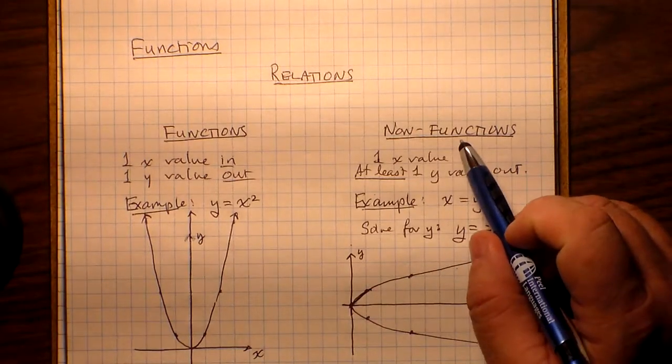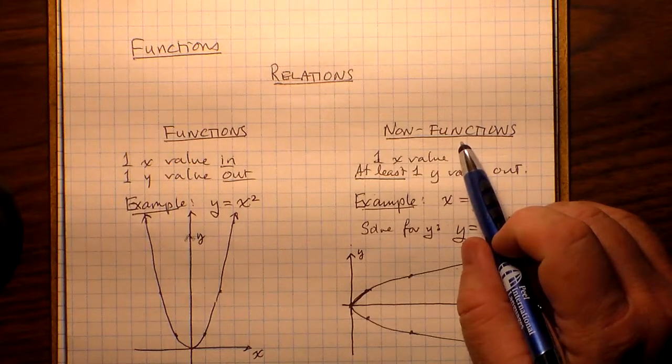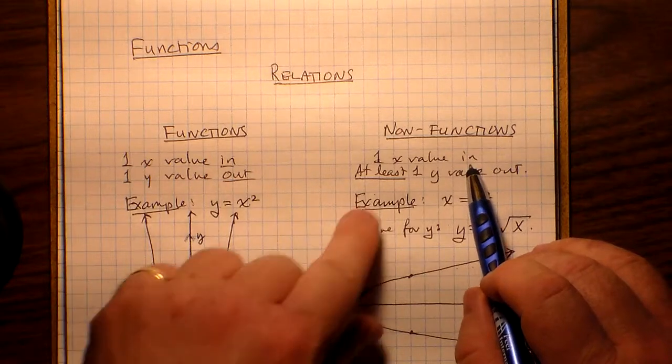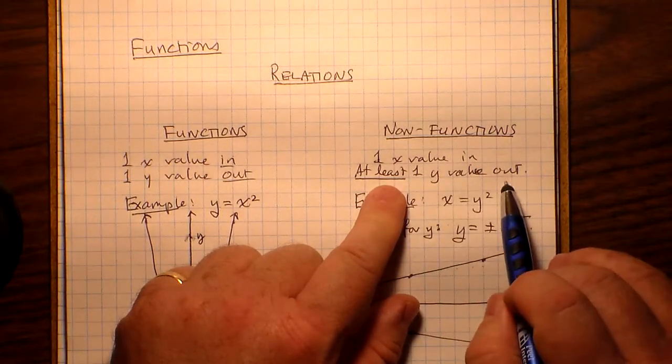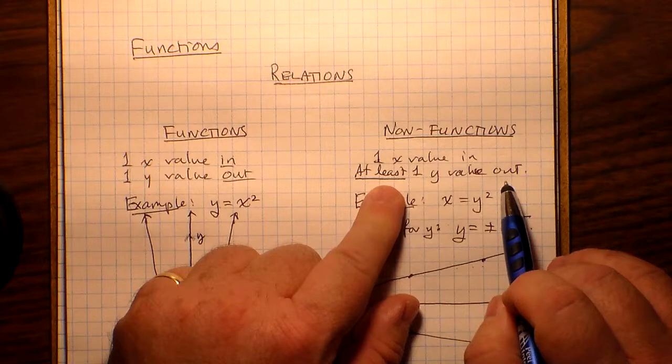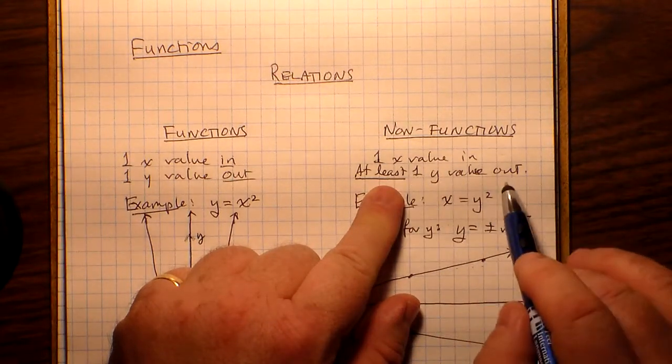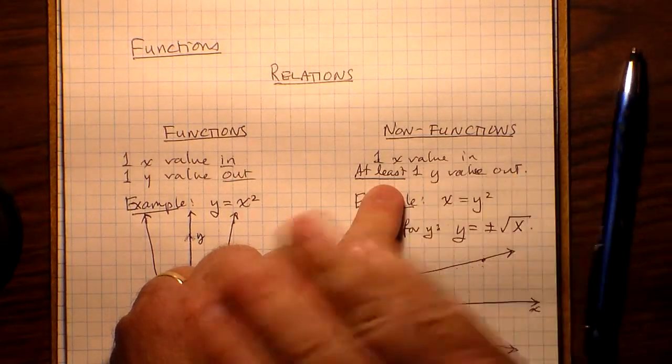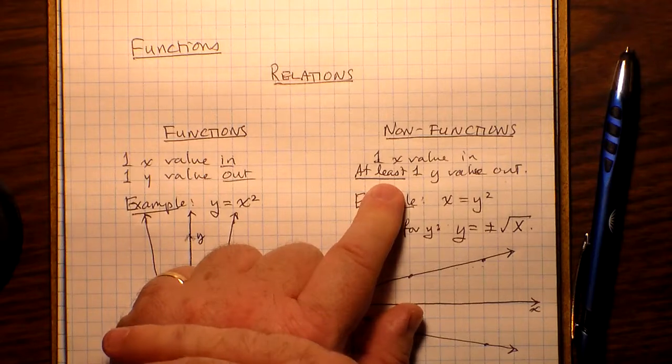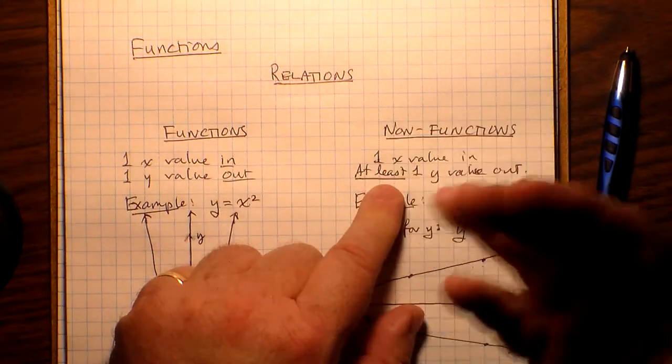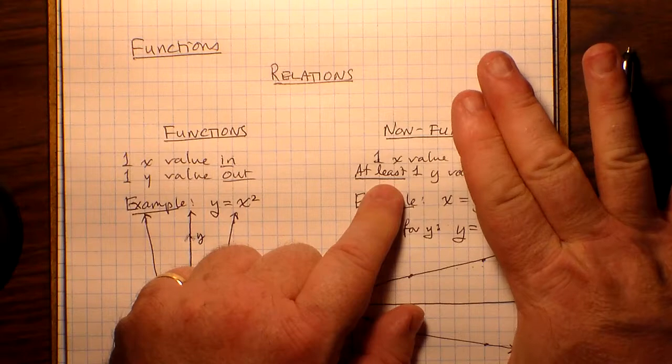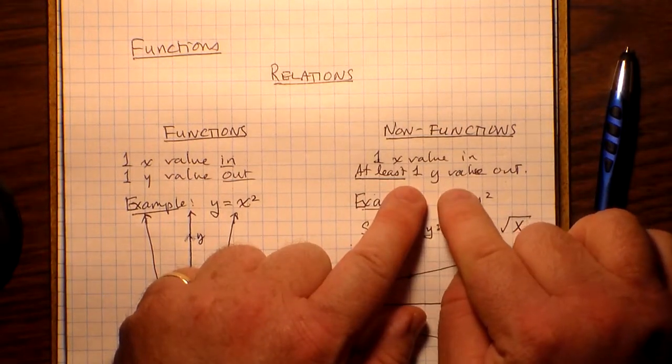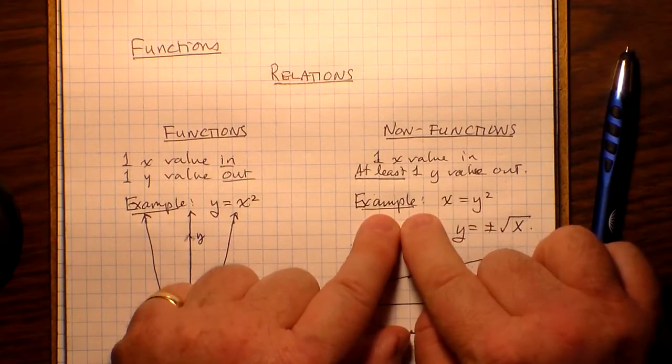All right, on this side we have non-functions. Now the idea is that if I put in one x value into a non-function, I get at least one y value out. I could say one x value in, two or more y values out, which is also true, but it's not true all the time. So in certain parts of the domain you might get one in and one out, but you're always going to, for these non-functions, you will always run into the problem that somewhere in the domain you're going to get more than one y value out. Here's an example.